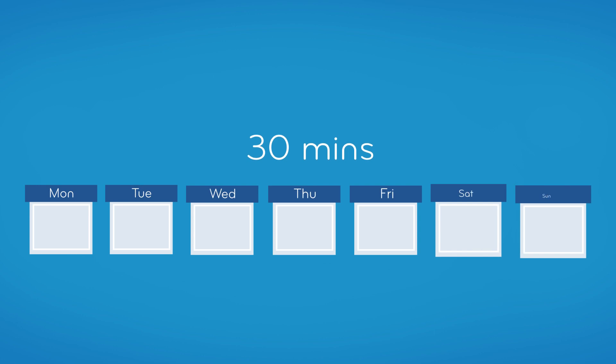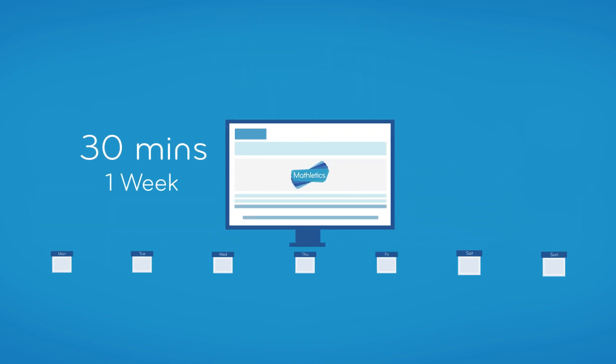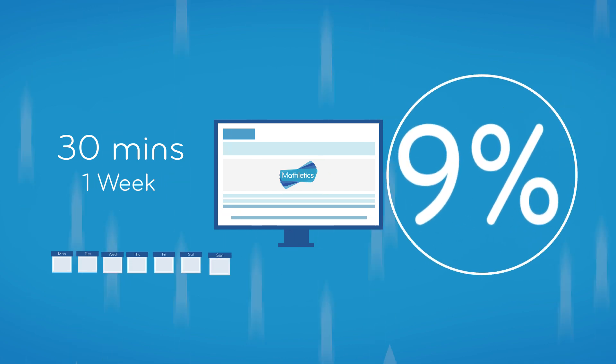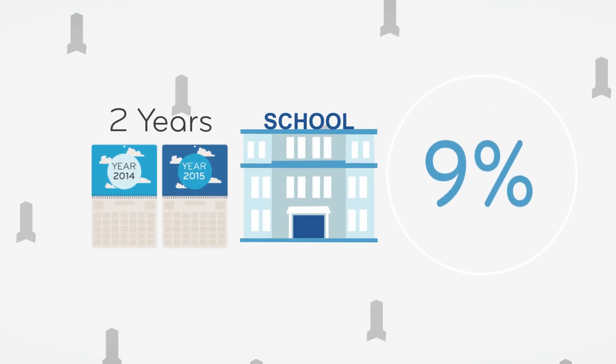By spending as little as 30 minutes a week on curriculum activities within Mathletics, schools can gain an advantage of up to 9% in external assessments. And schools that used Mathletics for more than two years saw an even greater jump in their results.